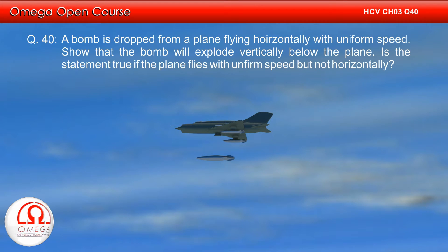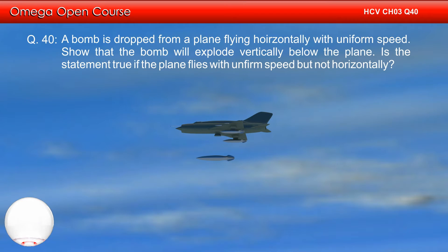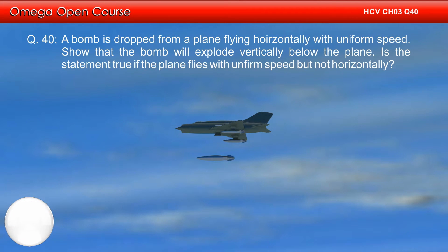A bomb is dropped from a plane flying horizontally with uniform speed, so that the bomb will explode vertically below the plane. Is the statement true if the plane flies with uniform speed but not horizontally?